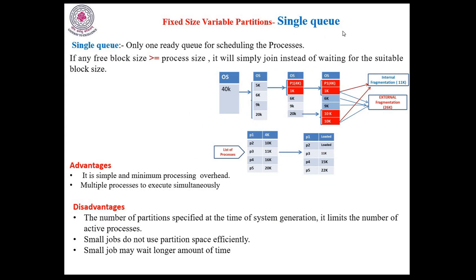In fixed size variable partitions with single queue, there is only one ready queue for scheduling the processes. If any free block size is greater than or equal to the process size, the process will simply join that partition instead of waiting for a more suitable block size.